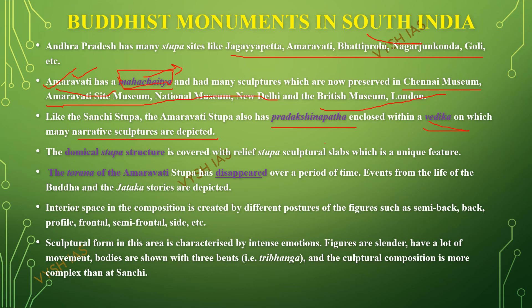Events from the life of the Buddha and Jataka stories are depicted. The interior space in the composition is created by different postures of figures — semi-back, back, profile, frontal, semi-frontal. Not only the front of the figures is sculptured; semi-back and back views are also included. The sculptured form in this area is characterized by intense emotions expressed in every sculpture.